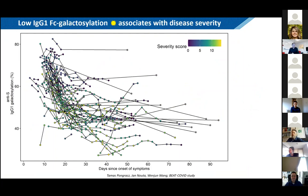That was the part on fucosylation, which still has many open questions. We also measured galactosylation on these antibodies and saw very distinct dynamics: these antibodies start with a very high level of galactosylation and then show a very dramatic drop within days or weeks. When the disease is peaking in severity, we see rather low levels of galactosylation, and this also comes with massive cytokine release — interleukin-8 release.